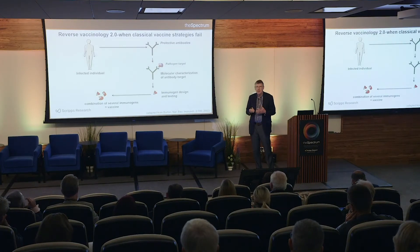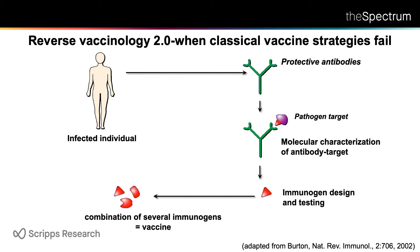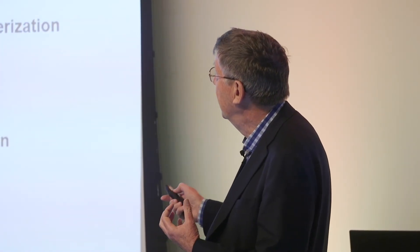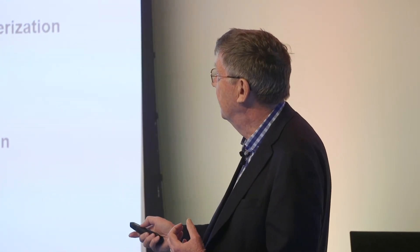We argued a number of years ago that we really needed a new strategy. The key observation was that even for these difficult pathogens, infected individuals — at a proportion, given time — still make protective antibodies if you look hard enough. We argued that if you could isolate those protective antibodies and investigate them at the molecular level, you could derive these molecular shapes, combine them, and put them into a vaccine formulation for uninfected individuals. If we've done everything right and understand all the geometry involved, they should elicit protective antibodies. We refer to this as reverse vaccinology.